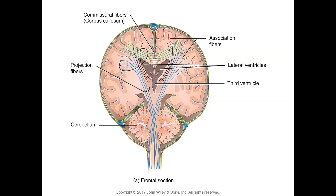All sensory neurons from the spinal cord come up to the cerebrum and relay at some area of the cerebral cortex, where they are interpreted, processed, and shared between different areas before a motor response is initiated. In cross-section, the cerebrum shows an outer gray matter consisting of neuron cell bodies, and inner white matter consisting of myelinated nerve fiber axons.